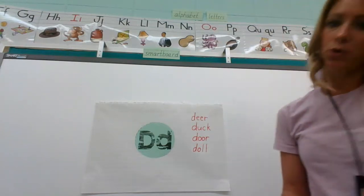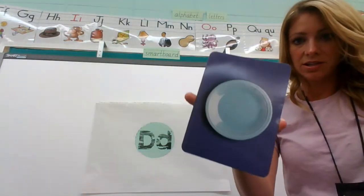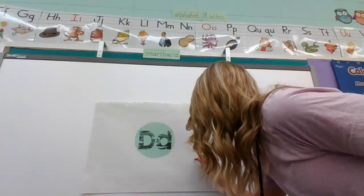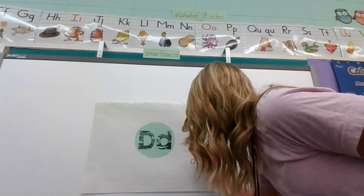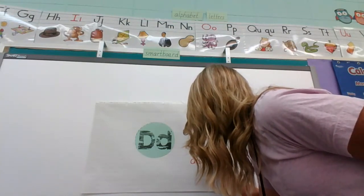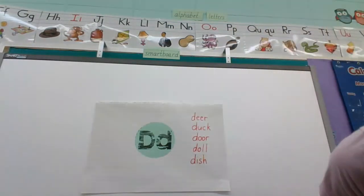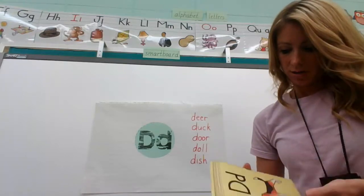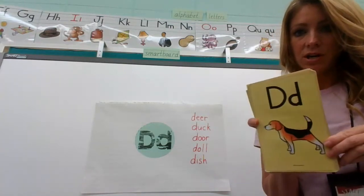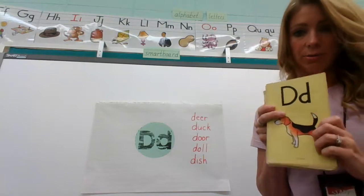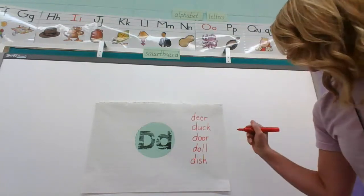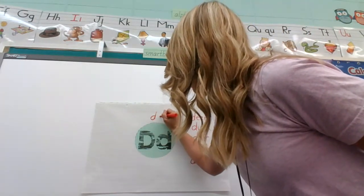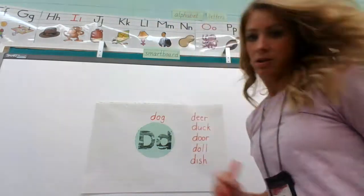I think we just have one more picture today. It's a dish — dish would start with a D. Let's add that down here. Pull back, around, up and down. Dish. And then I think I'm going to also start showing you the yellow cards. Dog — just like my dog pointer — is on that D card that we practiced. Let's write dog. Pull back, around, up and down. And there's the word dog.